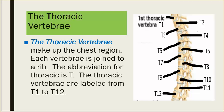The thoracic vertebrae make up the chest region. Each vertebra is joined to a rib. The abbreviation for thoracic is T. The thoracic vertebrae are labeled from T1 to T12.